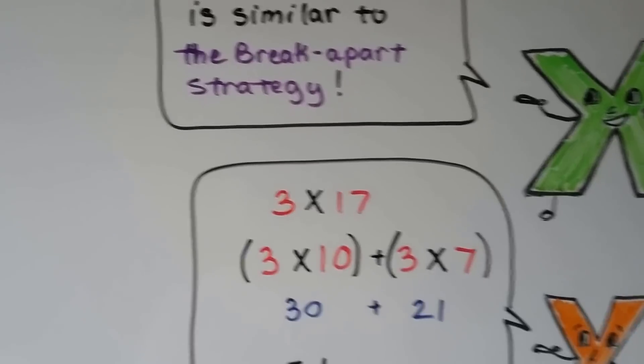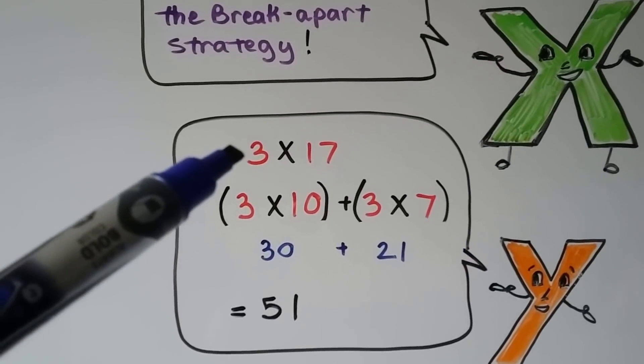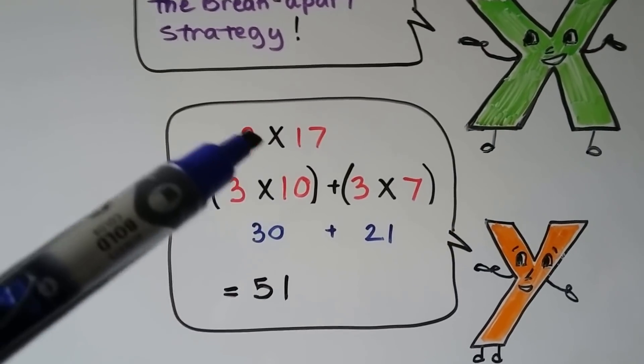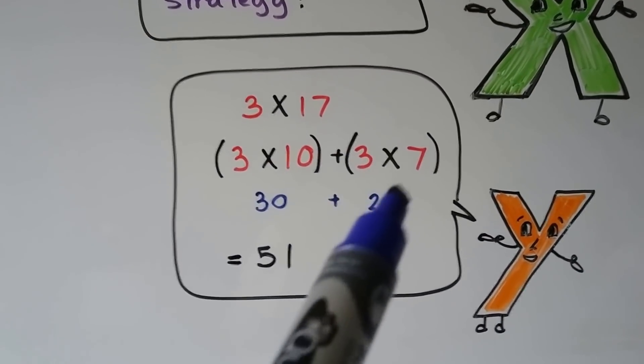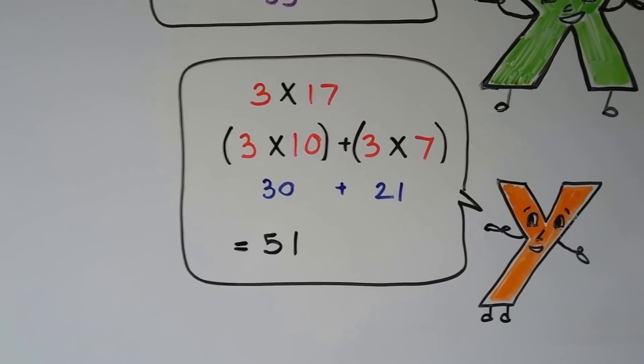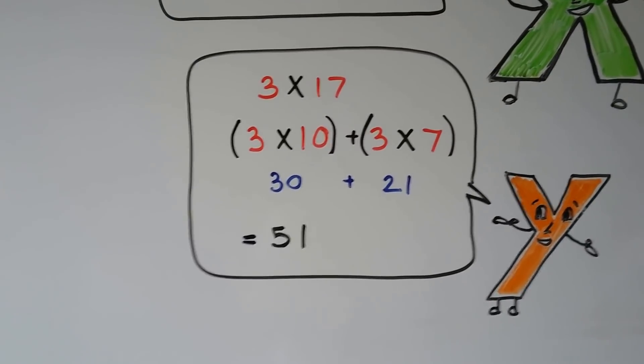The box method is similar to the break apart strategy. We learned that in fourth grade where if we have 3 times 17, we can do 3 times 10 plus 3 times 7. 3 times 10 is 30 plus 3 times 7 is 21, and that's 51.